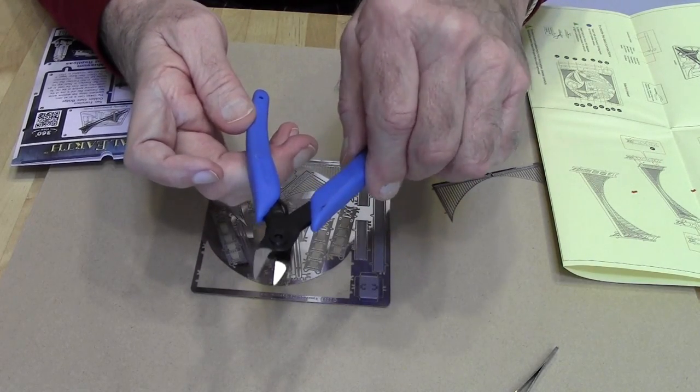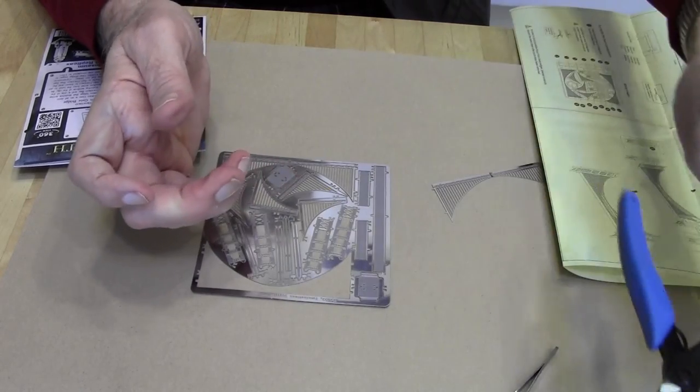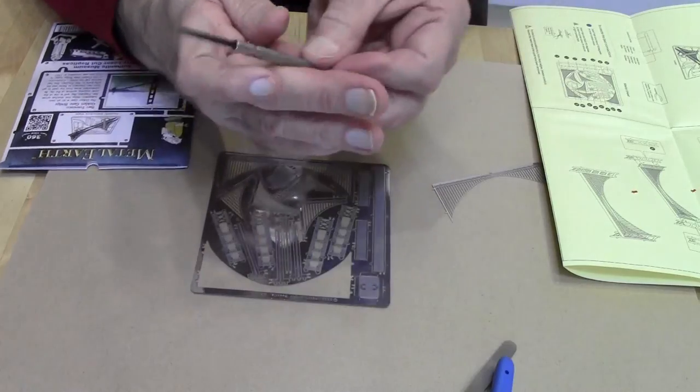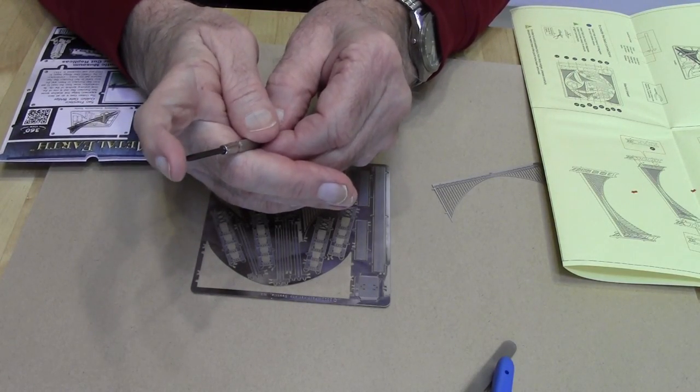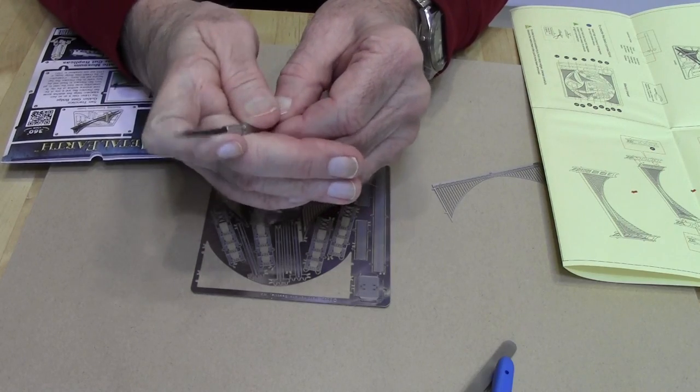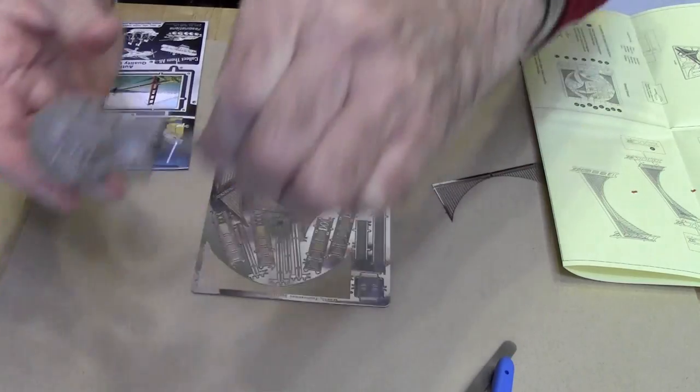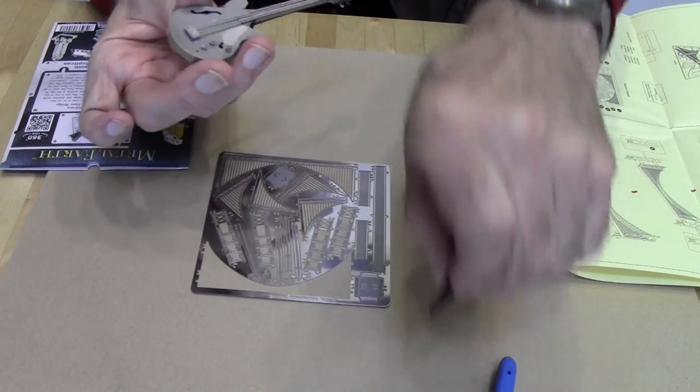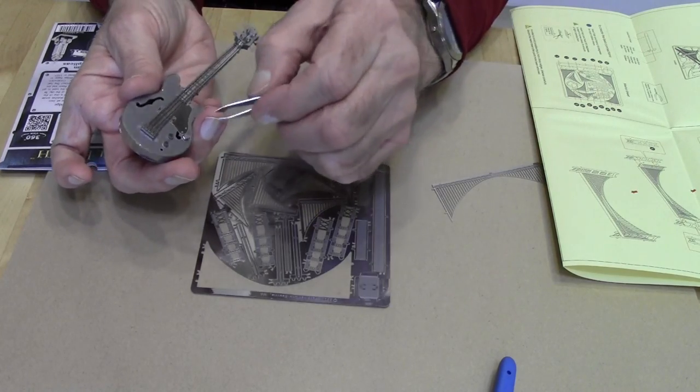The metal screwdriver I use is just a regular micro screwdriver, and I use it to finish the bend on the tab. To explain that, on the guitar all these little tabs have to connect to the front.